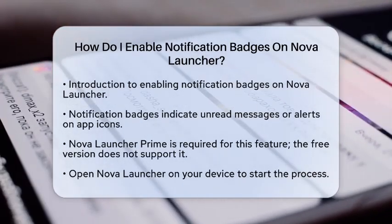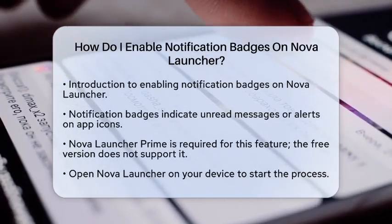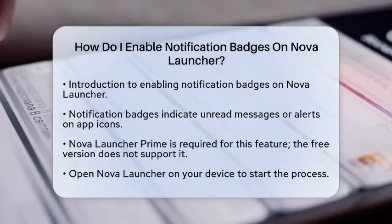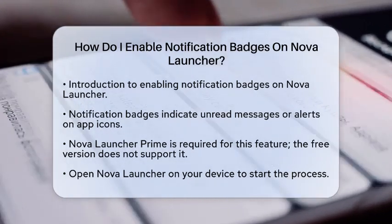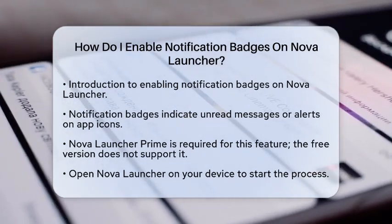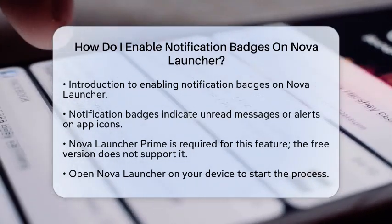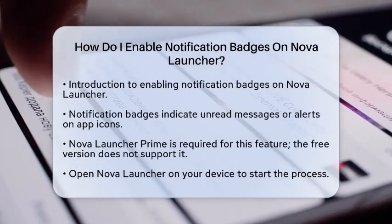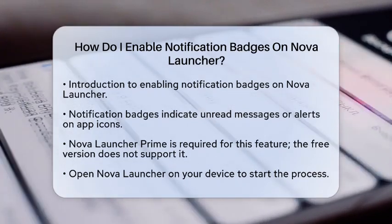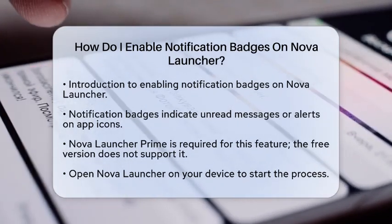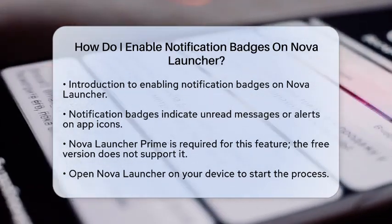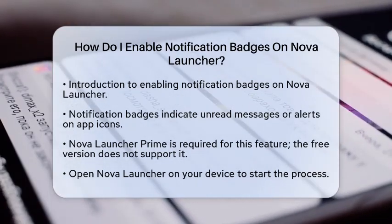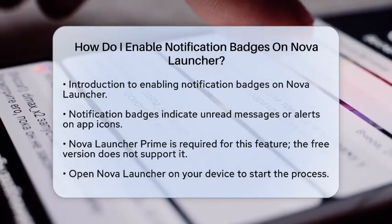Notification badges are those little icons or numbers that pop up on your app icons. They let you know when you have unread messages or alerts, making it easier to stay updated without opening each app.